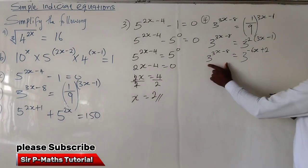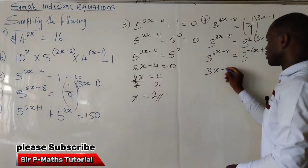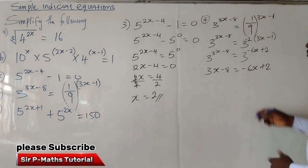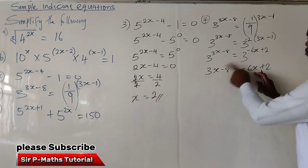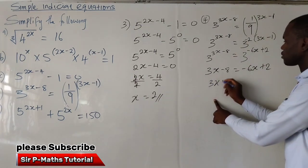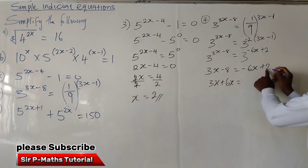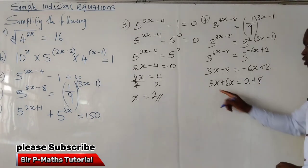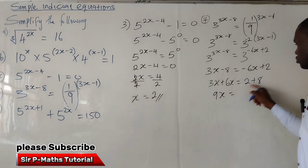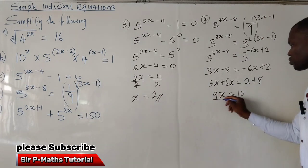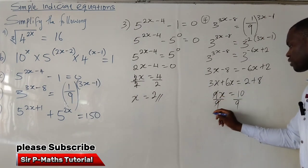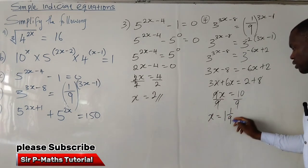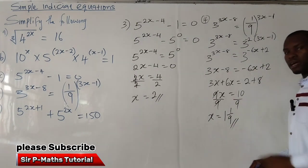Now that the bases are equal, equate the powers: 3x minus 8 equals minus 6x plus 2. Collecting like terms: 3x plus 6x equals 2 plus 8, giving 9x equals 10. Dividing both sides by 9, x equals 10 over 9, which as a mixed number is 1 and 1 over 9. Do not leave your answer as an improper fraction.